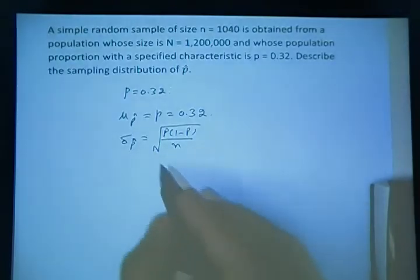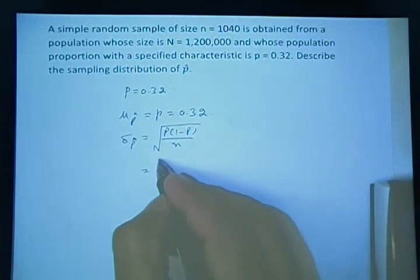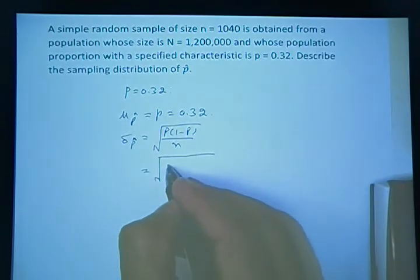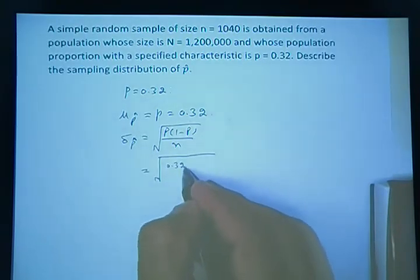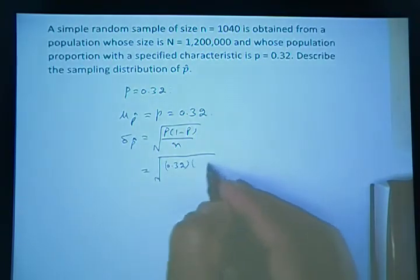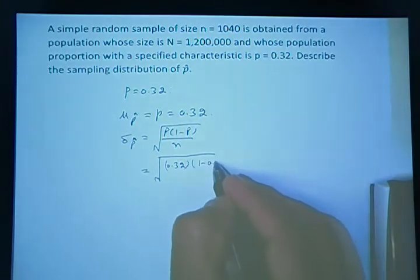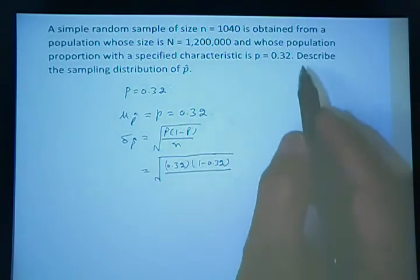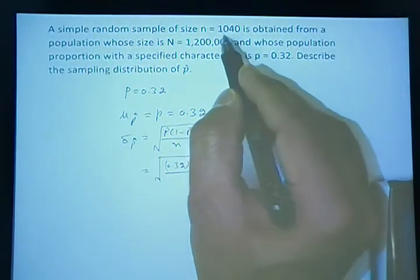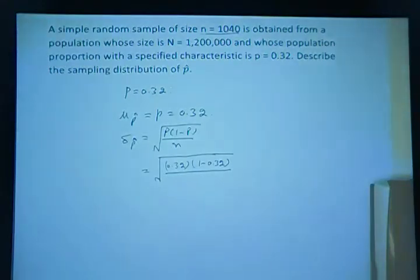So p times 0.32. P times 0.32, and then you have 1 minus 0.32 divided by n, and n in this case is here, this is n, 1040.